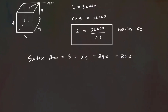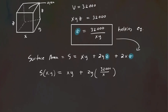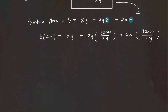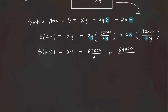Now we want to make this a function of two variables, so we replace Z with 32,000 over XY. Our surface area S(X,Y) becomes XY plus 2Y times (32,000/XY) plus 2X times (32,000/XY). Simplifying: the Y cancels in the second term giving 64,000/X, and X cancels in the third term giving 64,000/Y. So S(X,Y) = XY + 64,000/X + 64,000/Y.